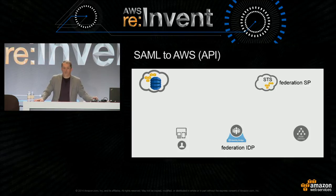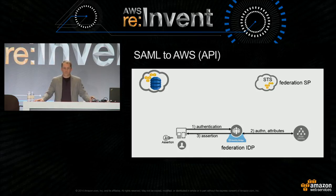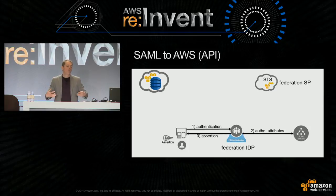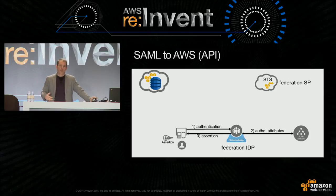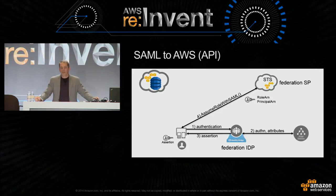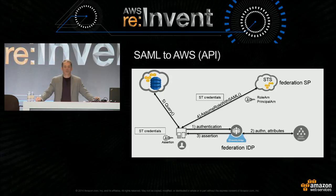A number of customers really love SAML and like using it even in a native application without a browser. The application authenticates, the federated IDP does its usual business, grabs all the attributes it needs about the user, and passes the assertion down to the mobile device into the native app—so the app itself is holding the SAML credential. You can mimic a browser transaction, or your federated IDP can enable you to make an API call and grab it directly. Once you have the SAML assertion, you just call AssumeRoleWithSAML, pass in the SAML assertion, the ARN of the role you want, and the principal IDP, and you get a set of short-term credentials.